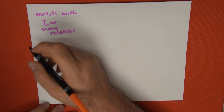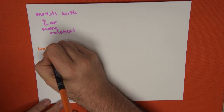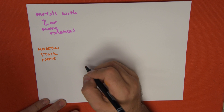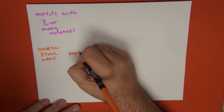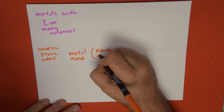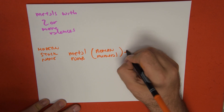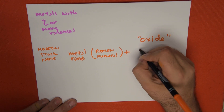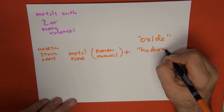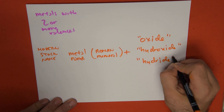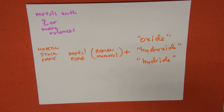For the modern name, or the Stock system, the formula for nomenclature is: metal name, then a Roman numeral which indicates the valence of the metal, plus the word oxide if we combine it with oxygen, plus hydroxide if we combine it with a hydroxide ion, or hydride if the anion was hydrogen.